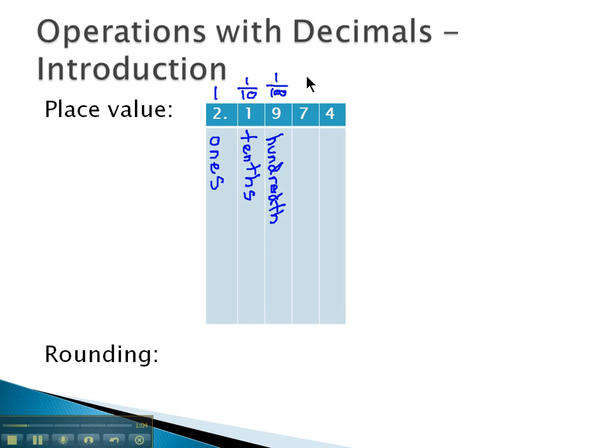And similarly, we would keep going. Adding a zero, we get the thousandths. And then finally, adding a zero to the fraction, we'll get 1 ten-thousandth, or ten-thousandths place.